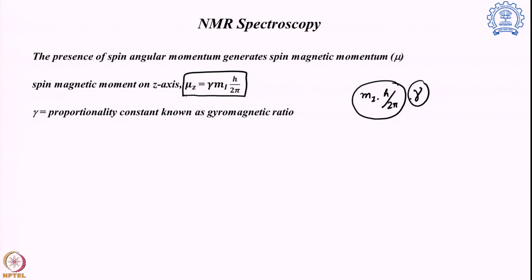This proportionality constant γ is also known as the gyromagnetic ratio. It defines how much of the angular momentum is actually converted into the magnetic moment, and for each particular nucleus this value is constant — each nucleus has its own distinct gyromagnetic ratio.